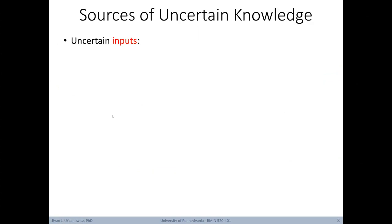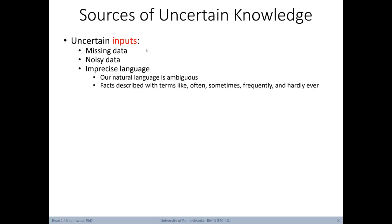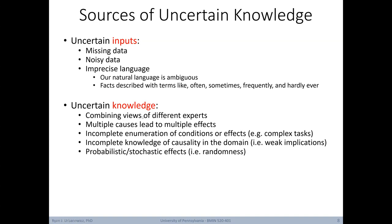Let's talk about some of the sources of uncertainty. First, we'll look at uncertainty of inputs — for example, uncertainty introduced by missing data, having noisy data, or the use of imprecise language. Our natural language is often ambiguous, and there can be facts described with terms like often, sometimes, frequently, and hardly ever. Uncertainty in knowledge might result from combining the views of different experts, there being multiple causes that lead to multiple effects, having an incomplete enumeration of conditions or effects, or having an incomplete knowledge of causality in the domain, which might mean that our implications are weakly structured. And of course, there are always probabilistic and stochastic effects, or just uncertainty that comes from randomness itself.